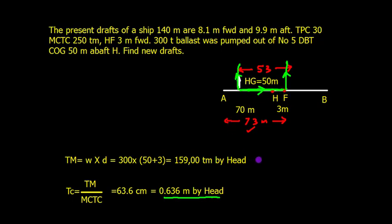If I discharge from here, it will give me body rise plus a trimming moment. I've already calculated the trimming moment. Now let's find the body rise. Body rise equals W divided by TPC, which is 300 divided by 30, giving 10 centimeters or 0.1 meters.